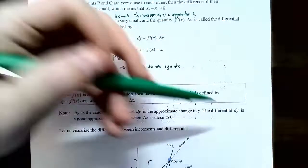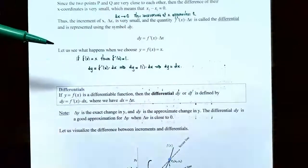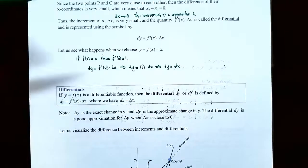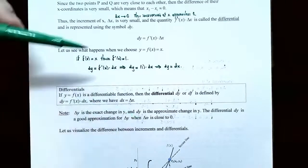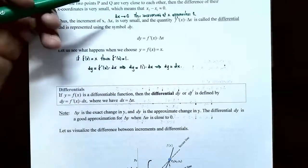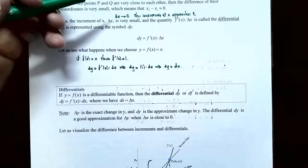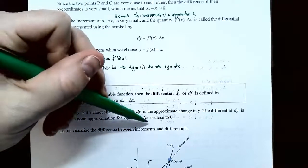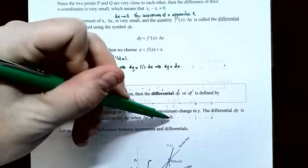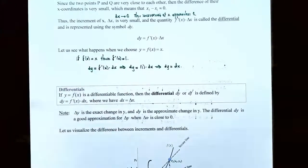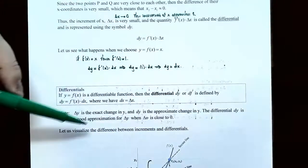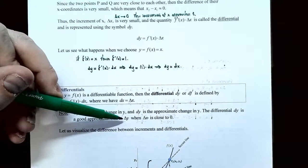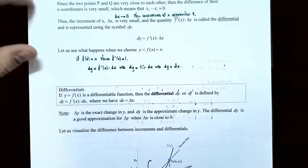The differential dy is a good approximation for delta y as long as delta x is close to zero. In other words, if the two points are really close to one another, delta x will be really close to zero, and dy will be a good approximation for the exact change in the y values.